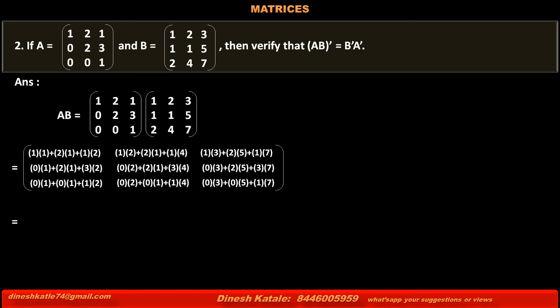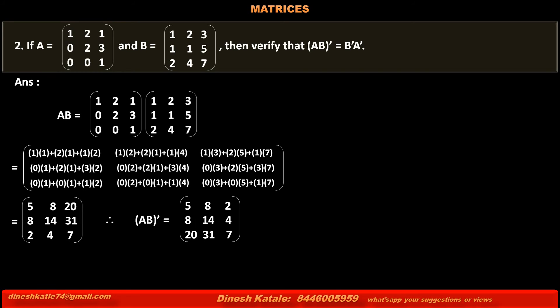Solving the calculation of each element, we get the matrix AB equal to [5, 8, 20; 8, 14, 31; 2, 4, 7]. Therefore, the transpose of AB — that is, (AB)ᵀ — is equal to the matrix obtained by changing rows into columns of matrix AB.